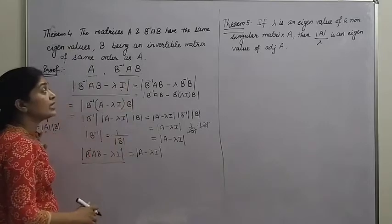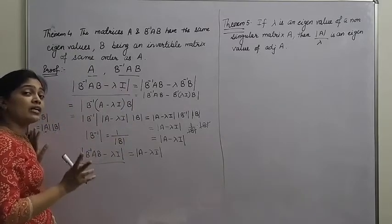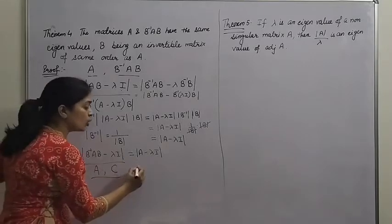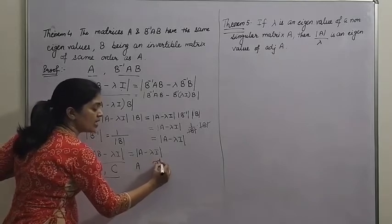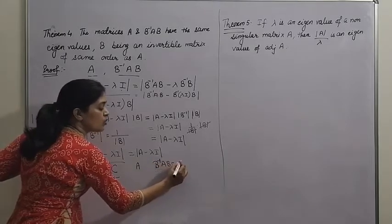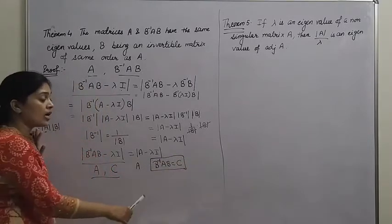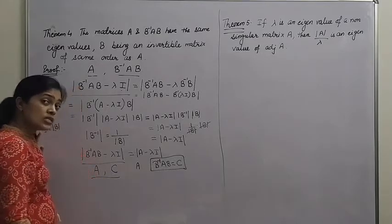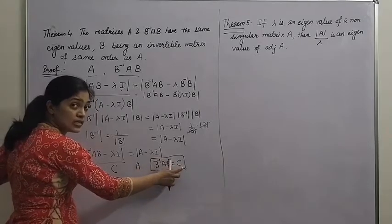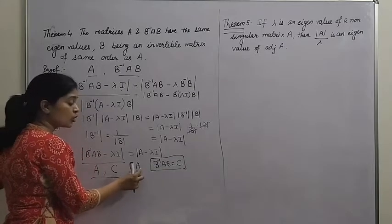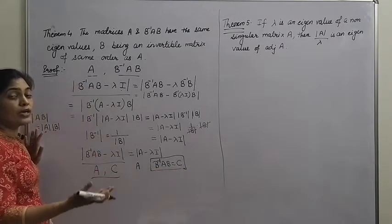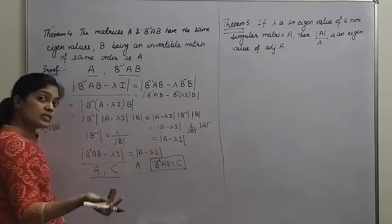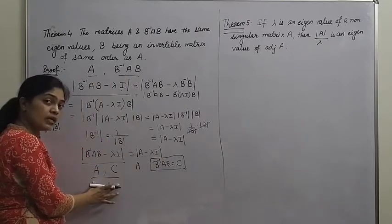From this we can also say: if two matrices are similar to each other, their eigenvalues are also the same. Two matrices A and C are similar if there exists an invertible matrix B such that B⁻¹AB = C. Since A and B⁻¹AB have the same eigenvalues, and B⁻¹AB equals C, this means similar matrices have the same eigenvalues.